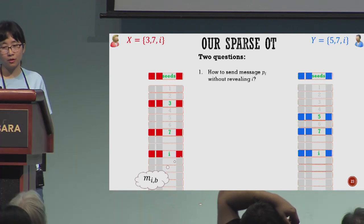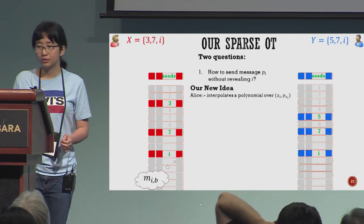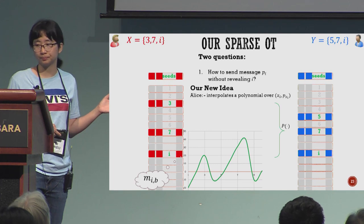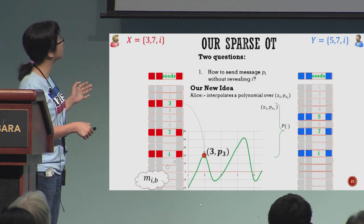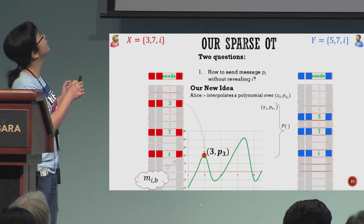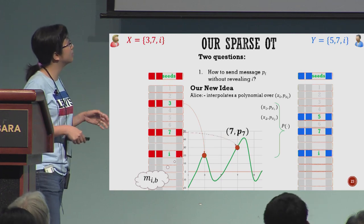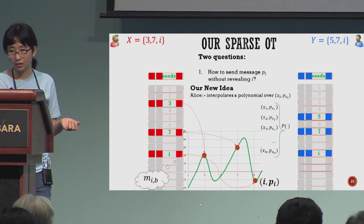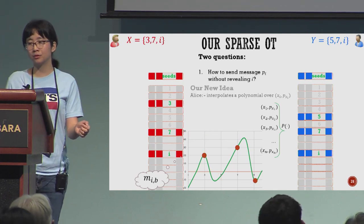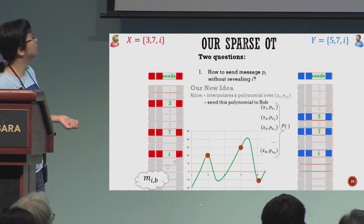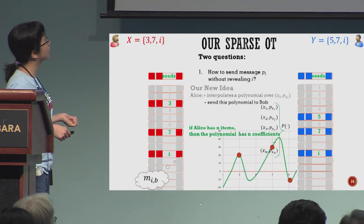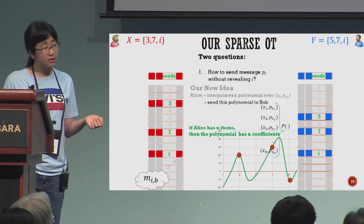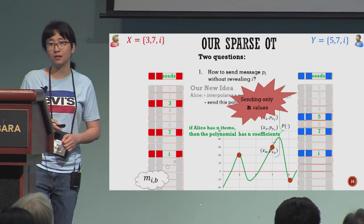We have a new idea to avoid sending huge matrices. Alice puts all of her Pi values into a polynomial. For example, this polynomial goes through the point (3, P3) where 3 is in her set, similarly (7, P7) and (i, Pi). Now Alice sends the polynomial to Bob. It's easy to see that if Alice has n items, this polynomial has n coefficients, so sending the polynomial is equivalent to sending n values.